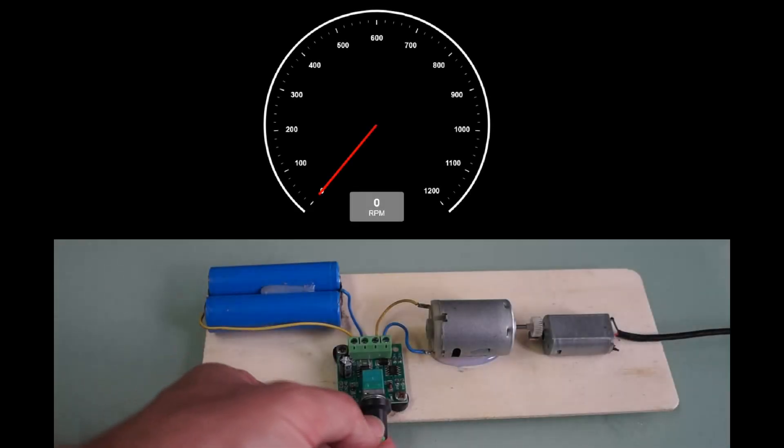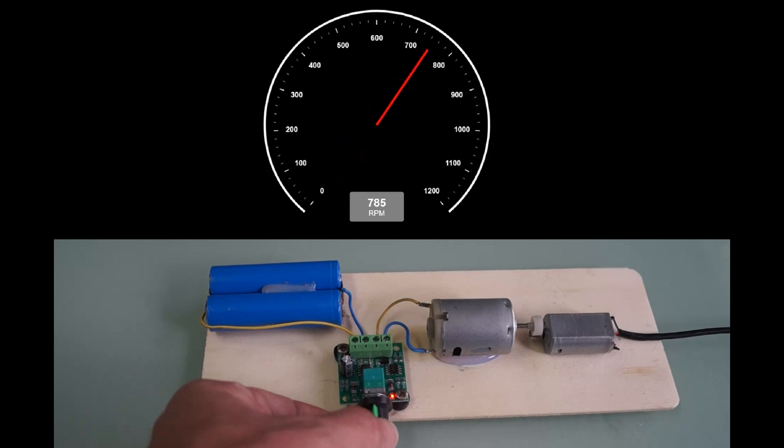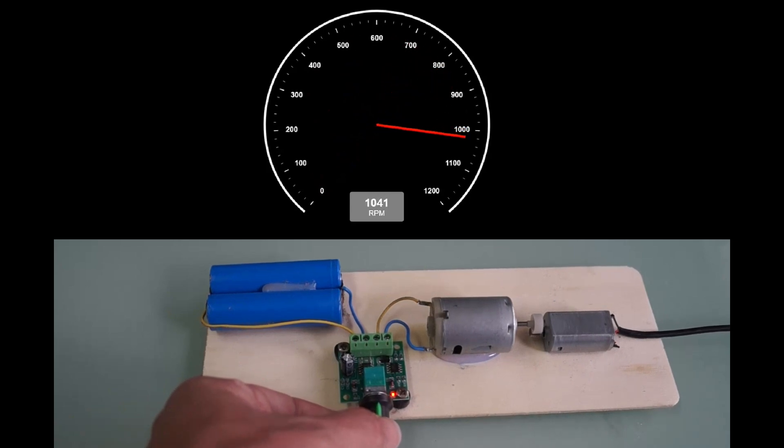For a more precise measurement of RPM, we can use the audio input of a computer. By placing a microphone close to the motor, we capture the sound generated by the motor's rotation.